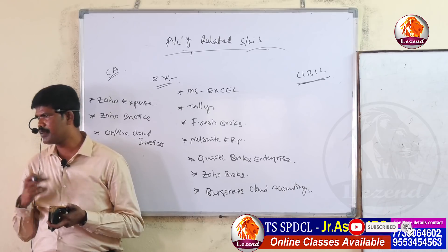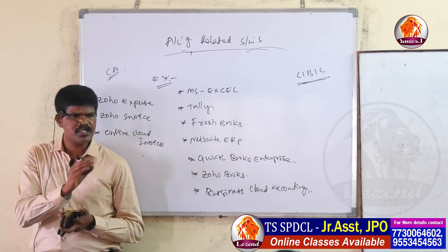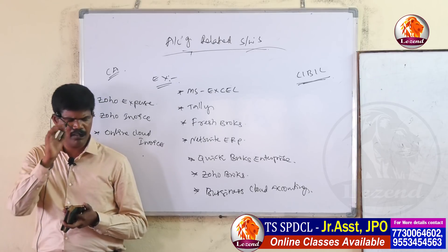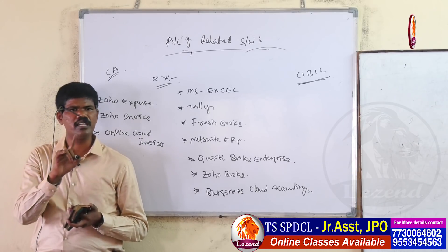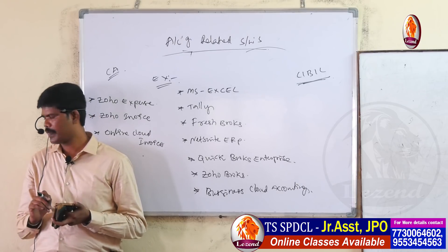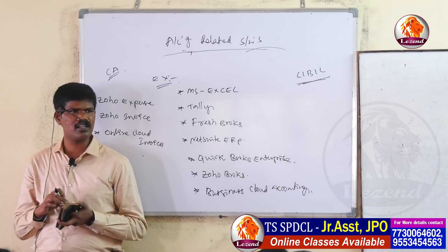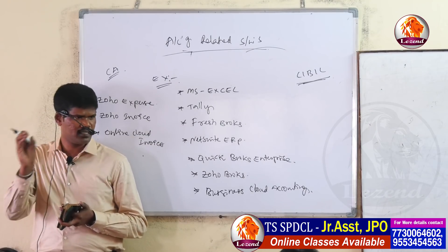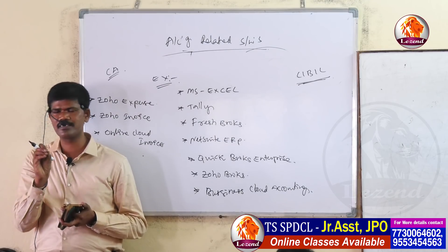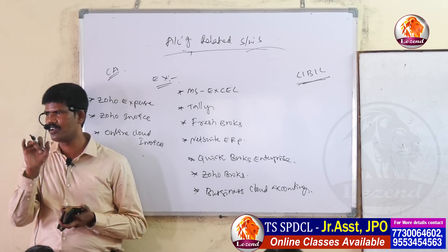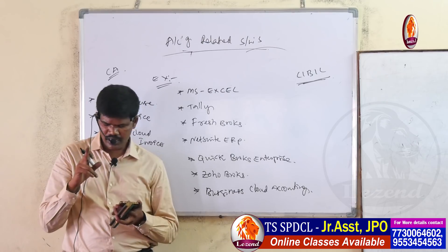The first point under 'Why we use accounting software' is simplification. Simplification means easy to maintain and easy to understand. Through accounting software, when you enter purchase, sale, rent — that will be handled automatically. So the first point is simplification: easy to understand and easy to maintain.